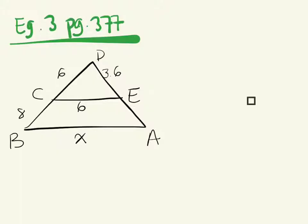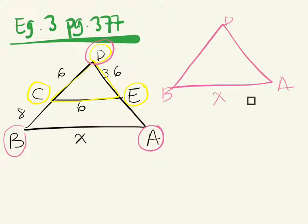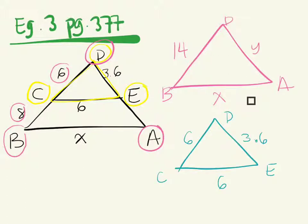We're trying to see if these two triangles are similar — and we have a triangle inside another triangle. So we're going to separate the two triangles and draw them separately. We have triangle CDE and triangle BDA. We label what information we're given. How can we find the length of BD? Add 8 and 6, which is 14. We also do not know the length of DA, so let's call it Y. Because we're not given any angles, we need to find the missing lengths. We're told these two triangles are similar, so we know the corresponding sides will all have the same ratios.